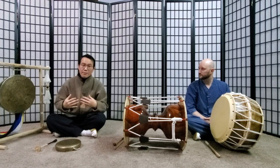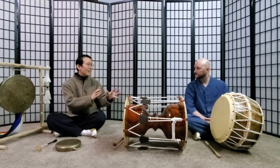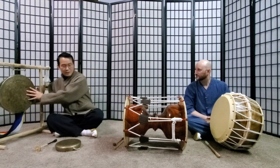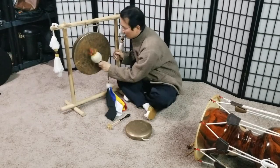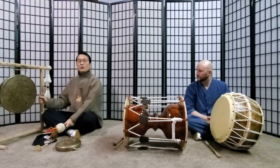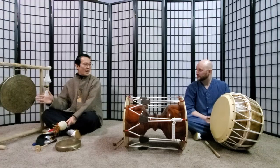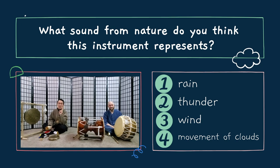We also believe that the sound of each instrument represents the sound of nature. Let's start with the jing — you already heard the sound of jing. What do you think it represents in nature? Number one: rain. Number two: thunder. Number three: wind. Number four: the movement of cloud.